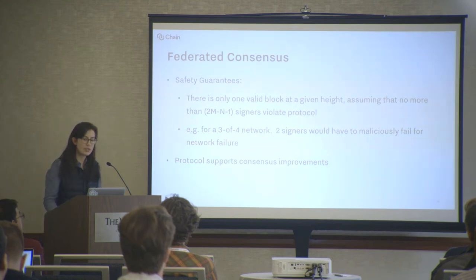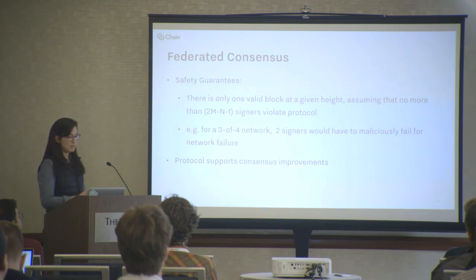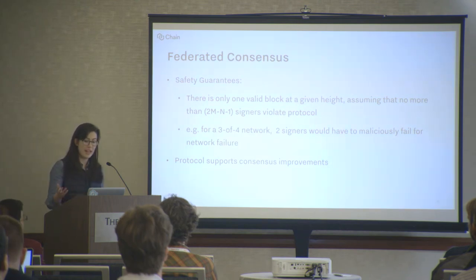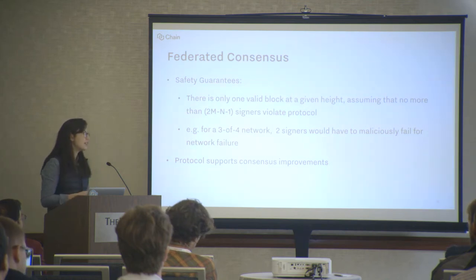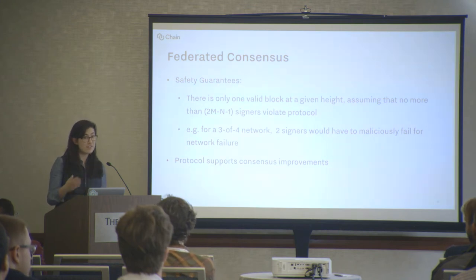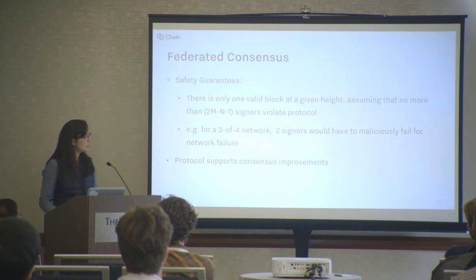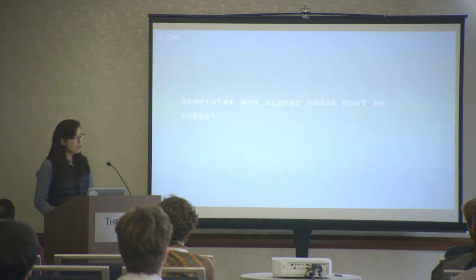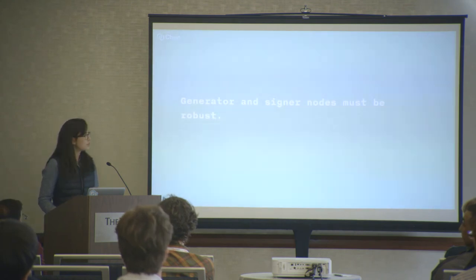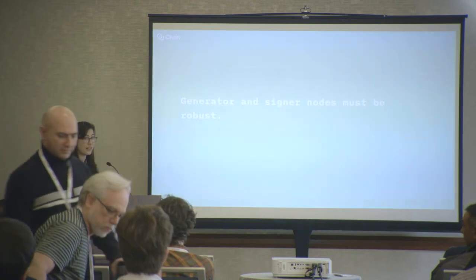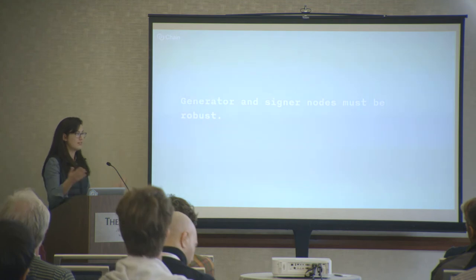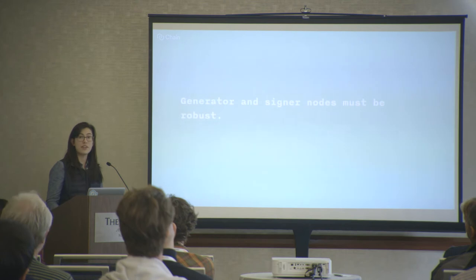So federated consensus is pretty safe. It guarantees that we won't have conflicting blocks — it guarantees that the nodes will be able to come to consensus, assuming that no more than 2M minus N minus one signers violate the protocol. So for a three-of-four network, two signers would have to misbehave before the protocol fails. Signers can misbehave in a few ways — either by validating and signing an invalid block, or by refusing to sign a valid block. This protocol does support consensus improvements, so we could implement a more paranoid consensus algorithm if we wanted to. Federated consensus is more efficient than proof of work, but it does rely on the assertion that the generator, and at least M of those signer nodes, must stay online — they must be robust and highly available. This is really different from a system like Bitcoin, where there are many nodes that can create a block. Bitcoin has no availability requirements for any particular participant.